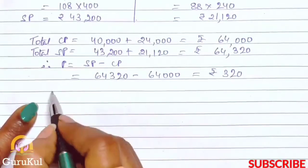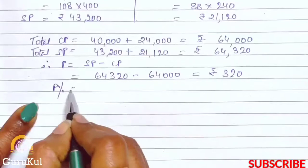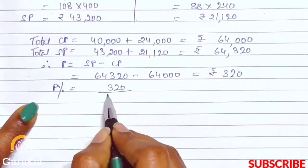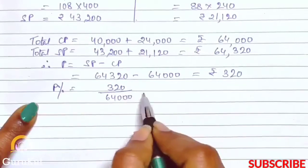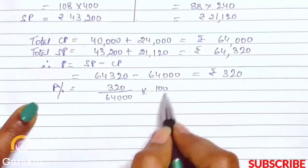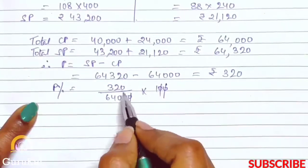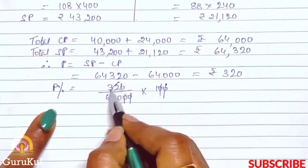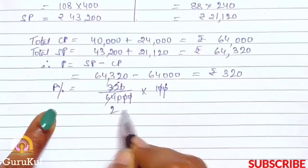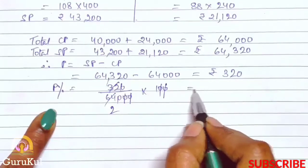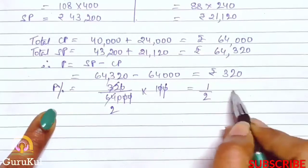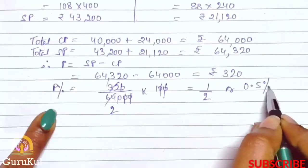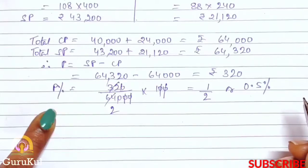Now we need to find the profit percentage. Profit% = (Profit / CP) × 100 = (320 / 64,000) × 100 = 1/2 = 0.5%. So the answer is a profit of 0.5%.